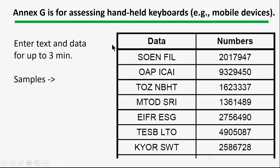Annex G is used for assessing handheld keyboards. One takes text data and enters it using a mobile device. This is about a third of the entire list used — they chose fairly random letters and number strings with some breaks to aid in performing the task. Performance is measured by time and errors. If you want the full list, you need to go to the original document 9241-420. My purpose in this presentation was not to reproduce everything in the document but to give you enough to decide whether this standard is relevant to what you do.